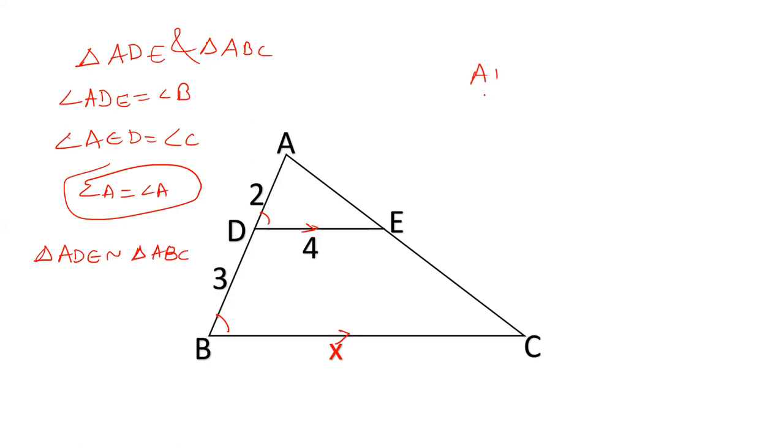If the triangles are similar, their corresponding sides are proportional. AD upon AB equals AE upon AC equals DE upon BC. AD is given as 2, AB will be the whole side which equals 5. DE is 4, BC is X. So 2X equals 20, X equals 10.